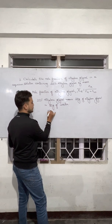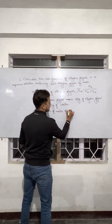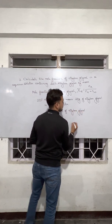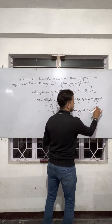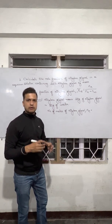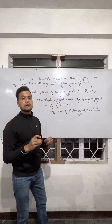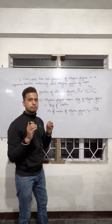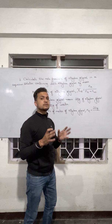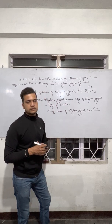The number of moles of ethylene glycol, N_E, is the given mass divided by the molecular mass. The given mass is 20 grams. Now, the question is: what is the molecular mass of ethylene glycol? That is where your basic concept of formulas and names of chemical compounds is very, very important. Your basic concepts in chemistry play a very, very important role in solving such problems.